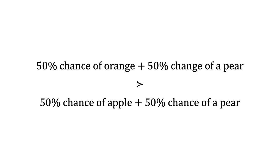In the second, they are offered a choice between two gambles. The first gamble is a 50% chance of an orange and a 50% chance of a pear. The second is a 50% chance of an apple and a 50% chance of a pear. They state that they strictly prefer the gamble with a 50% chance of an orange.